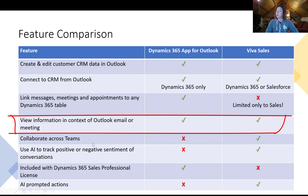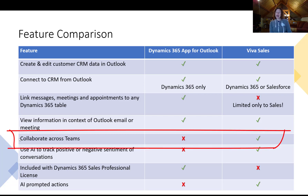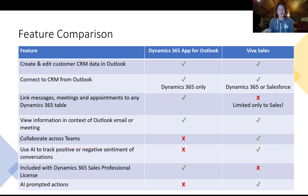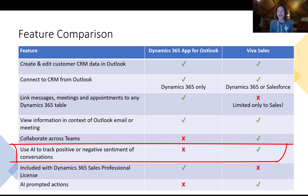If you need to extend linking capability beyond sales, you'll have to use the App for Outlook for now. Viewing information in the context of an Outlook email or meeting — you can use either app for that. Now here's where the App for Outlook starts to lose some points and Viva Sales gains: collaborate across Teams — that Teams integration is very tight with Viva Sales. And then there's the ability to use AI to track positive or negative sentiment of conversations, which is where Viva Sales starts to get really exciting.